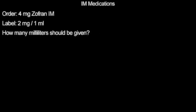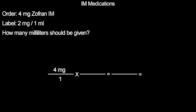Next we will look at IM or intramuscular medications. There is an order for 4 milligrams of Zofran IM. The label states that Zofran comes as 2 milligrams per 1 milliliter. How many milliliters should be given? We start our equation with our 4 milligrams desired dose. Multiply by our 2 milligrams per 1 milliliter. Cancel like terms and multiply across. We get 4 milliliters over 2. Divide and we are left with our dose of 2 milliliters.